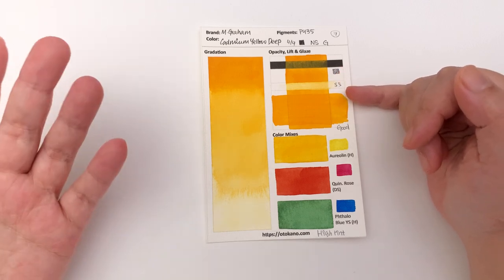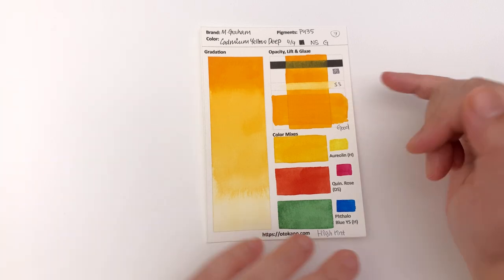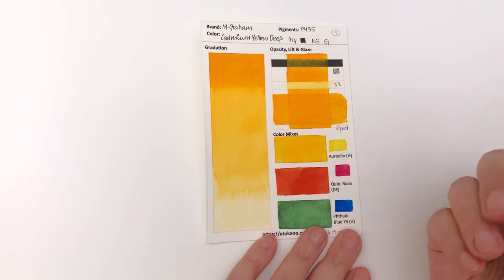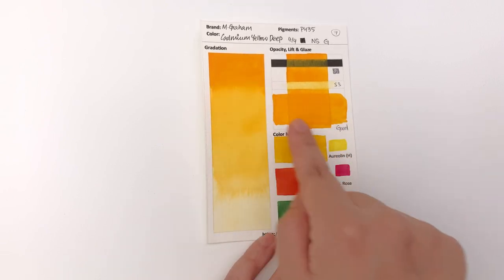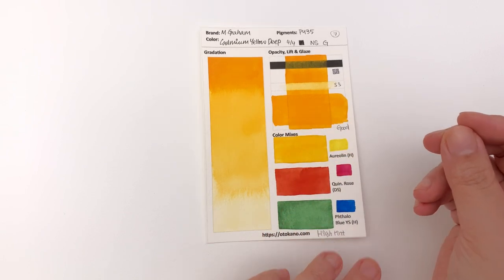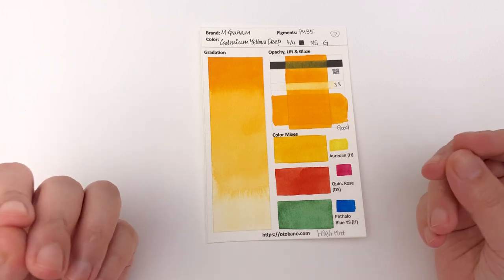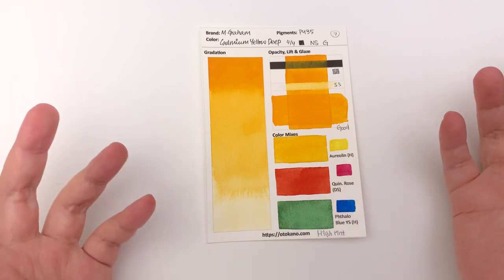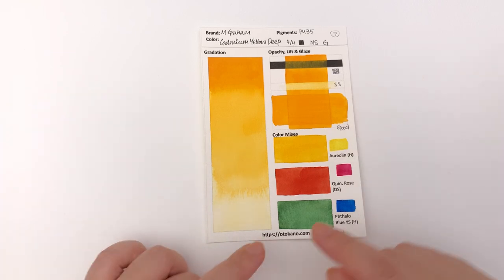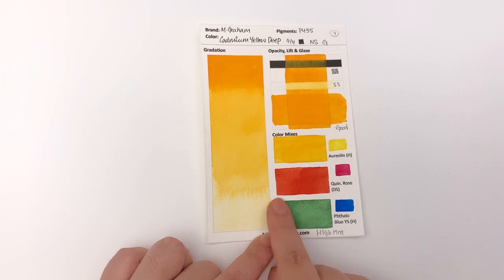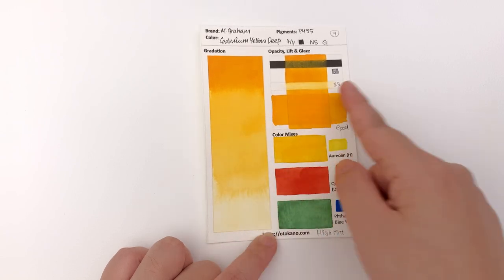It's classified as non-staining and again I would say this is semi-staining. It is a pretty good glazer although the mass stone has a little bit of streakiness to it and you can kind of see that here. When you paint in the mass stone there's some texture happening that it's not granulation it's just stripiness. This color again is classified as granulating but I don't really see it. I can just about see it faintly when I mix it with phthalo blue yellow shade but I see nothing here.